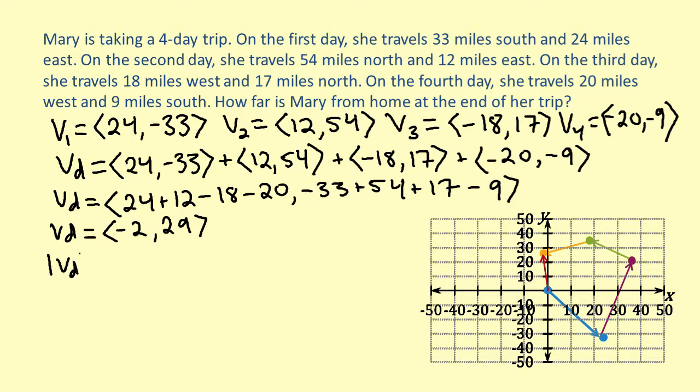So we have the magnitude of vd equals the square root of -2 squared plus 29 squared. This gives us vd equals the square root of 4 plus 841, which equals the square root of 845.